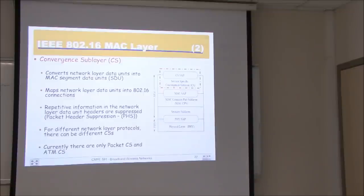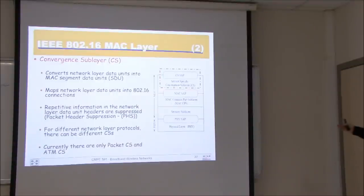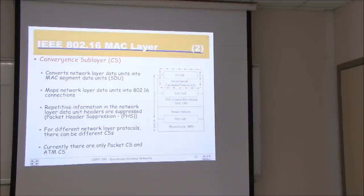What are those repetitive information? Like source and destination. Because in IP, every packet has a source and destination. Whereas here we have connection-oriented — if I know the connection, I know who the source is and who the destination is, so you don't need to repeat it. For different network layer protocols, there can be different convergence sublayers. Currently there are only Packet CS and ATM CS.